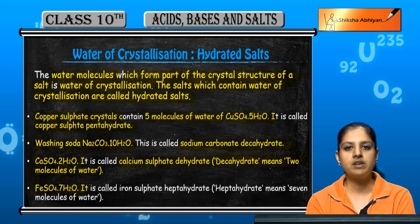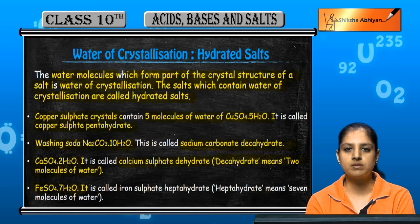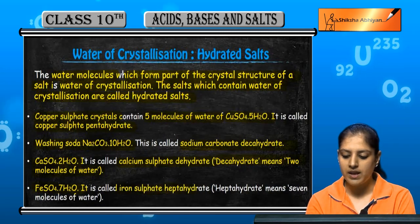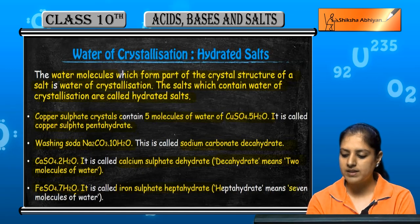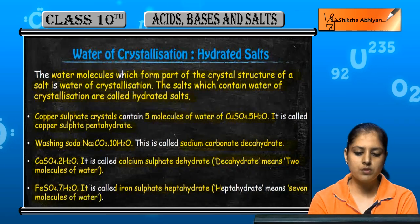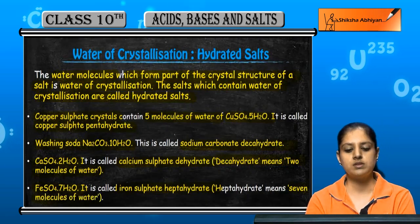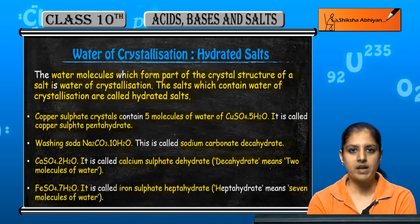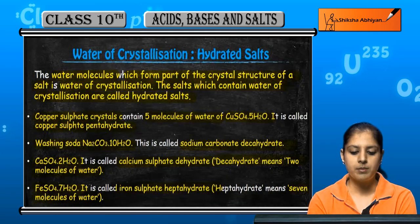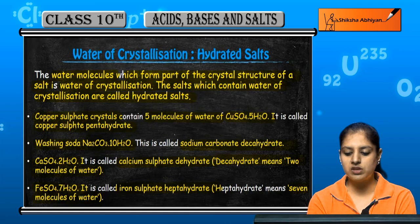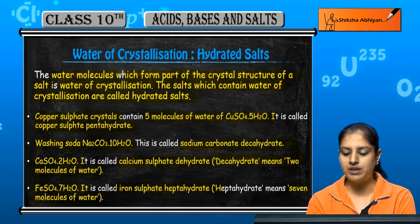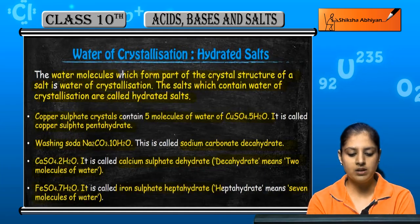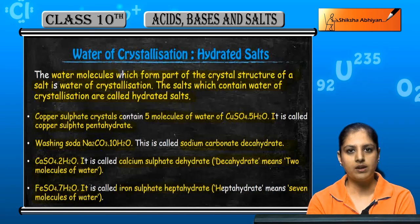FeSO4·7H2O is called iron sulfate heptahydrate, having seven molecules of water. To summarize the naming: five molecules is pentahydrate (copper sulfate), ten molecules is decahydrate (Na2CO3), two molecules is dihydrate, and seven molecules is heptahydrate.